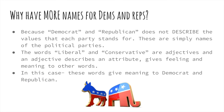We have more names for Democrats and Republicans as a way for us to describe the values that each party stands for. Right now, when you tell somebody you're a Democrat or a Republican, the very first thing they think is whether you support or don't support things like women's rights, abortion, or the war on drugs. So people automatically go to the issues.